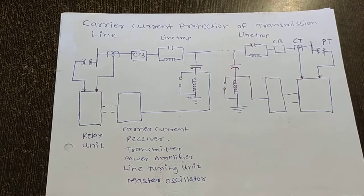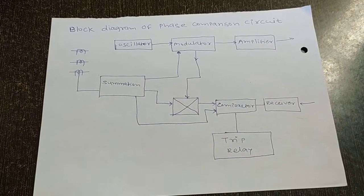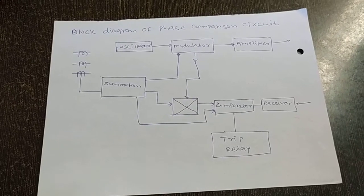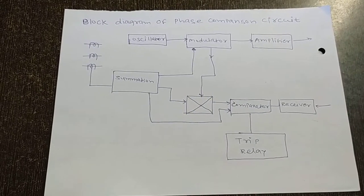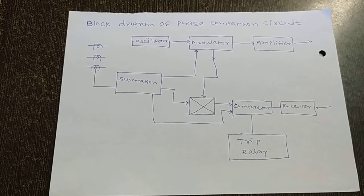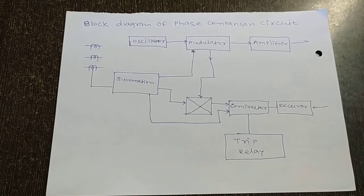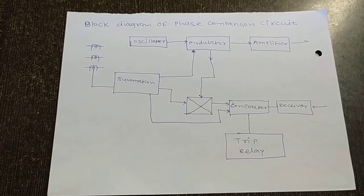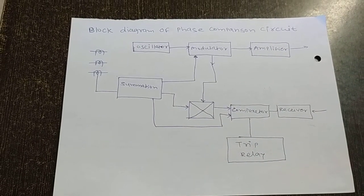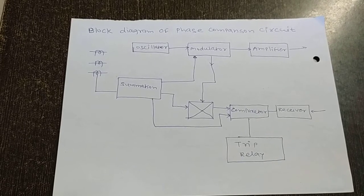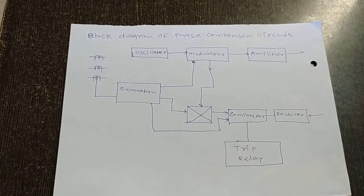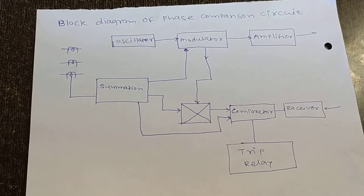The second method for protection of the transmission line is phase comparison carrier current protection. In this method, the phase relation between the current entering the protected zone and the current leaving the protected zone is compared. The magnitude of current is not compared here, and phase comparison provides only main protection.